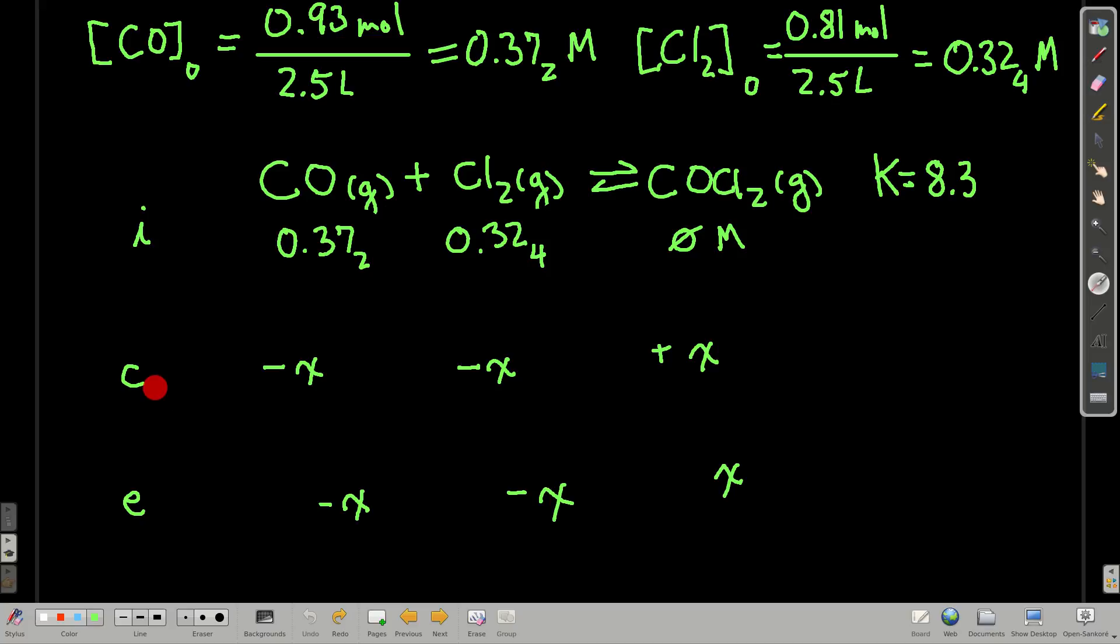C is what the change is. Now, in this reaction, the stoichiometric ratios are all 1 to 1 to 1, so for every one carbon monoxide we lose, we lose one chlorine and gain one of these, so there's just X. Now, if let's say, for example, there was a 2 in front of the chlorine, then it would be minus 2X for that, but it's not.